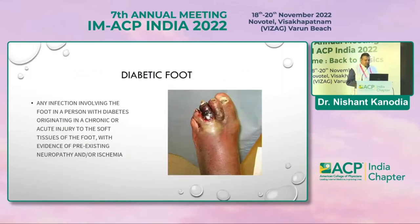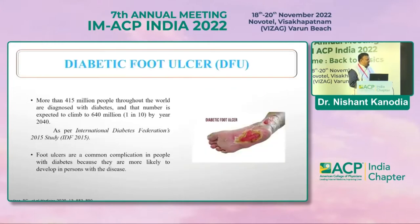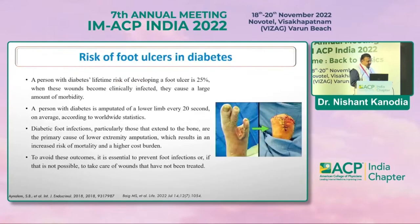The topic for today is fungal infections in diabetic foot. Any infection involving the foot in a patient who has diabetes, with chronic or soft tissue injury, can result in neuropathic or ischemic diabetic foot, which can convert into diabetic foot ulcers. Over 415 million people have chronic diabetes, and this may rise above 640 million by 2040. Ulcers are one of the most common complications, and a person with diabetes has a lifetime risk of developing a foot ulcer of 25 percent.